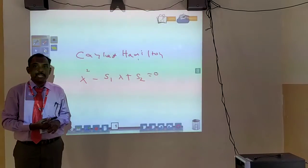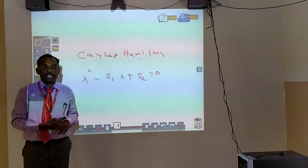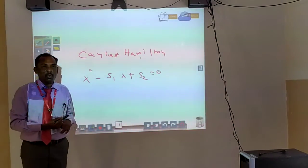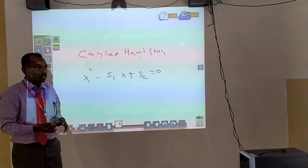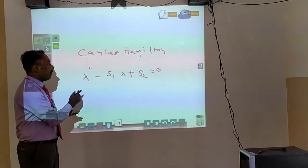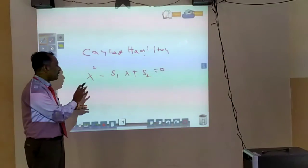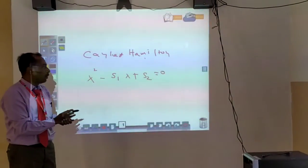Every square matrix satisfies its own characteristic equation. This is the definition of characteristic equation in a 2 by 2 matrix.